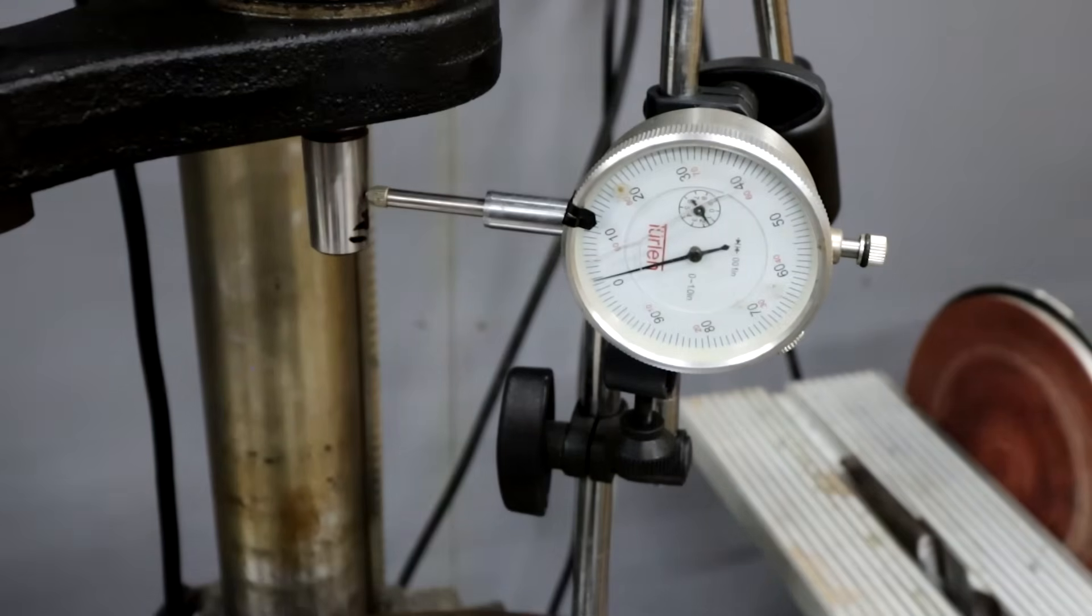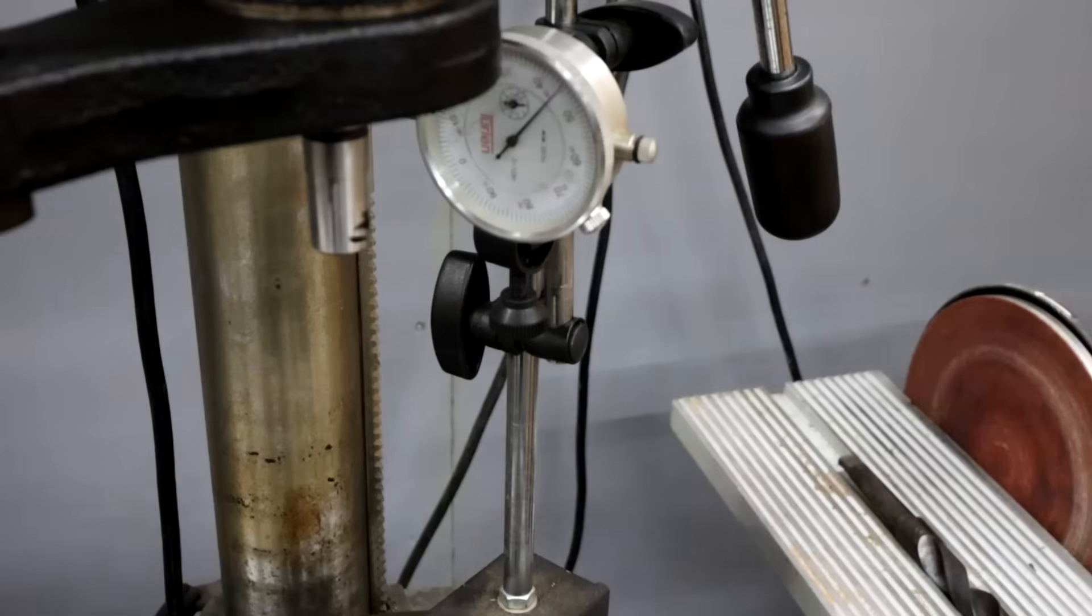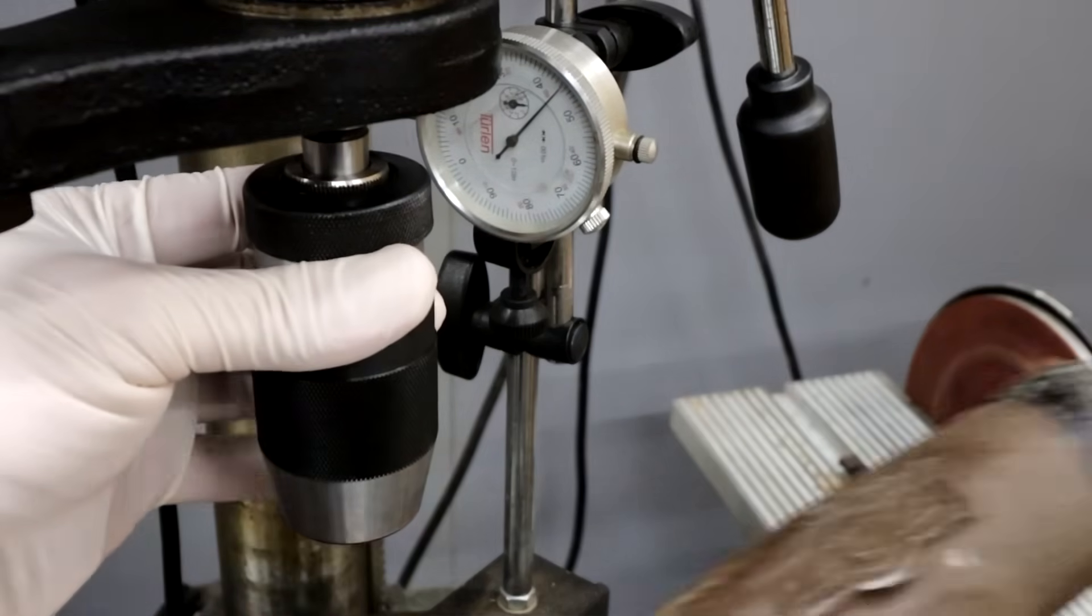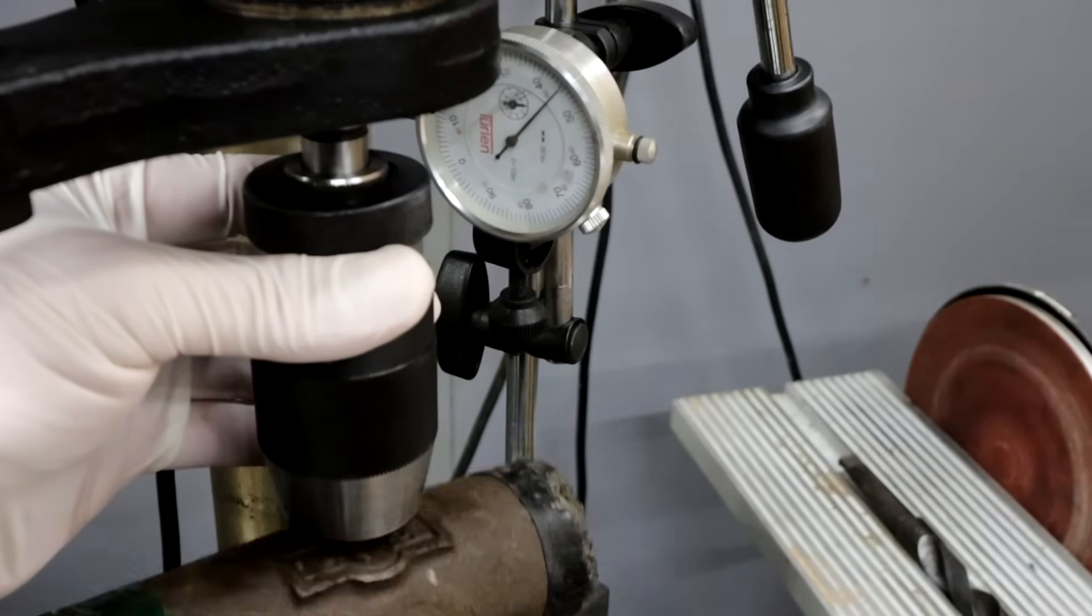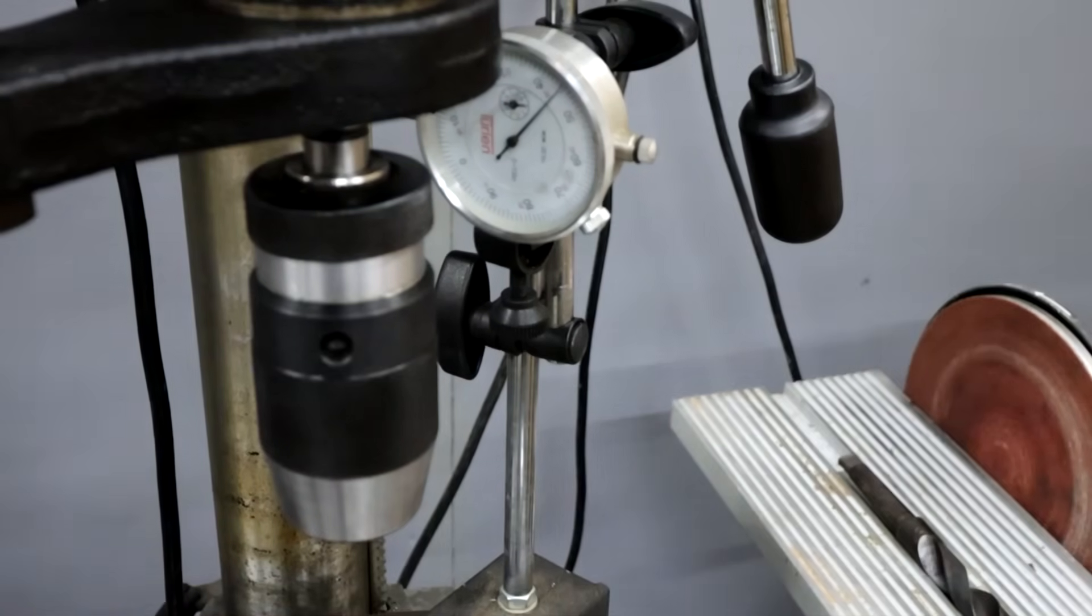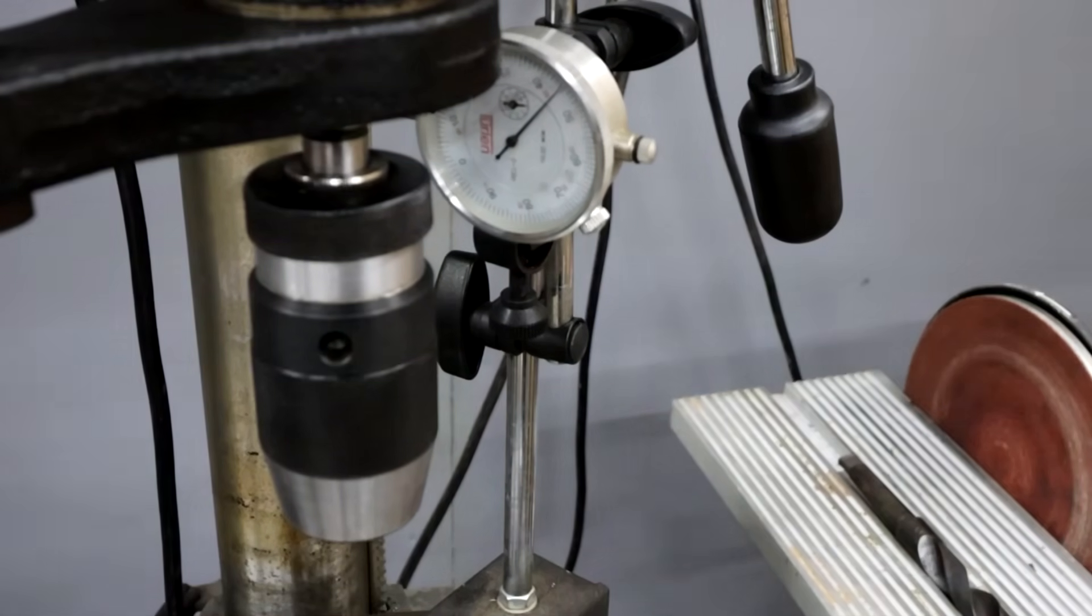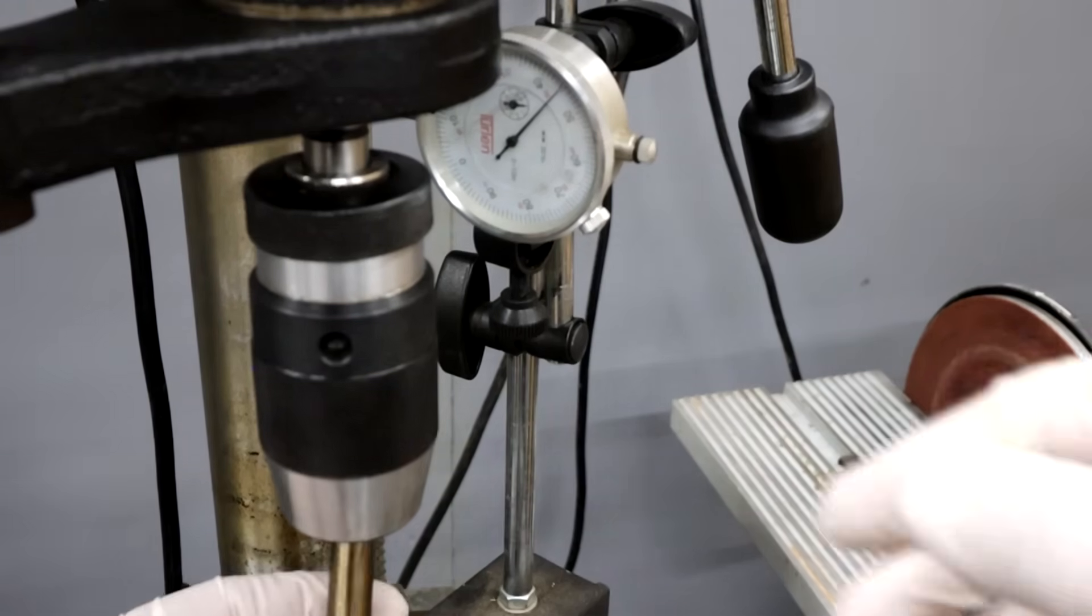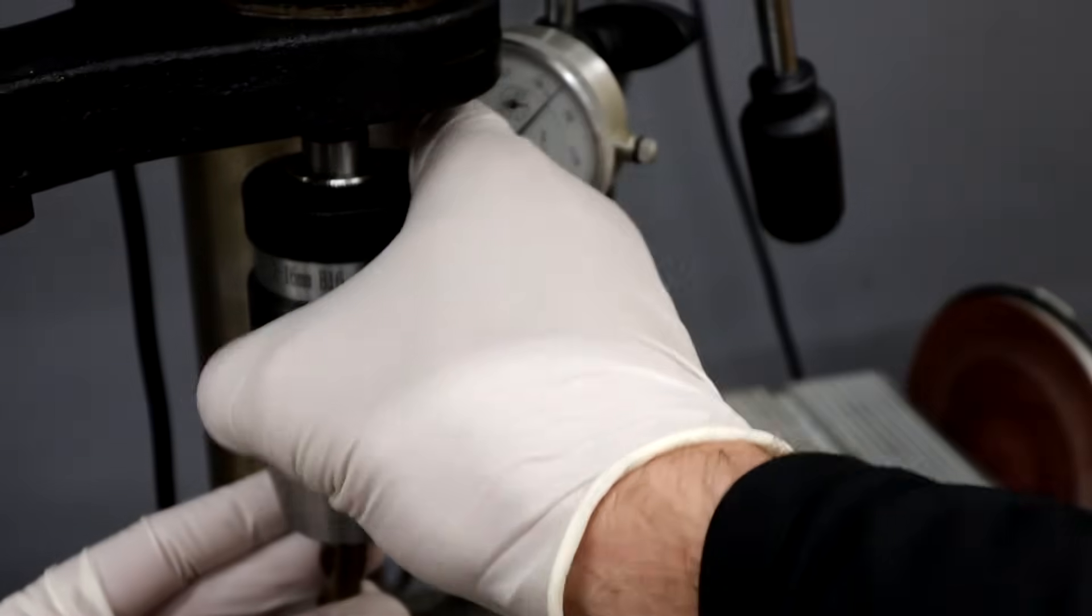So now let's put the chuck on and see how it acts with that. Now rather than put a dial indicator on a chuck anywhere itself, I'm just going to chuck up the drill bit and we'll jump straight to that.